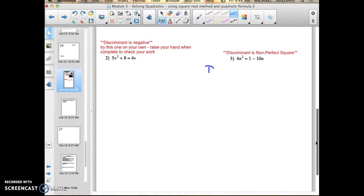So first step is to put it in standard form. I add 10n, I subtract 1, add 10n, subtract 1. So now I have 4n squared plus 10n minus 1 equals 0. Good.